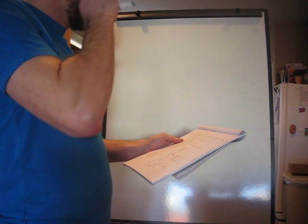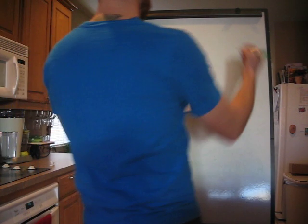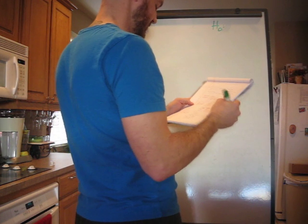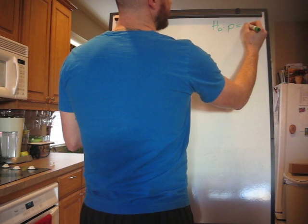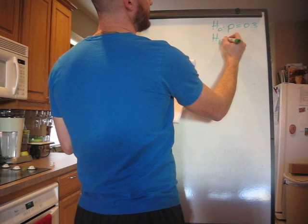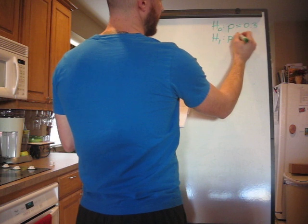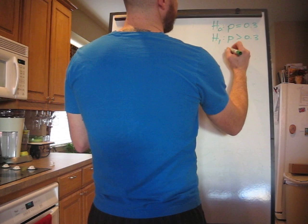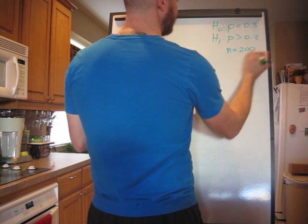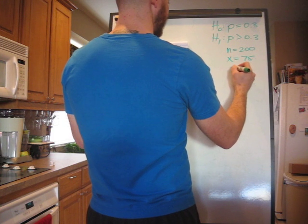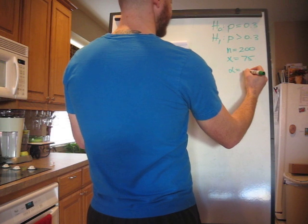Anyway, our given data is H sub 0, or H naught, or null hypothesis, whatever it is you call it, is P equals 0.3. Our alternate hypothesis, or H sub 1, is P is greater than 0.3. We're also given N is 200, X is 75, alpha is 0.05.